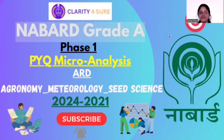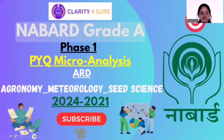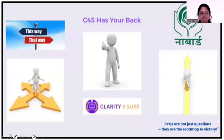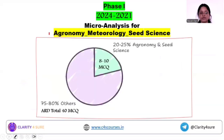Hello everyone. I welcome you to the PYQ microanalysis series for NABARD Grade A Phase 1 ARD, that is Agriculture and Rural Development. We already covered the microanalysis for animal husbandry, and now we are going to cover the microanalysis for the next important part — agronomy, meteorology, and seed science.